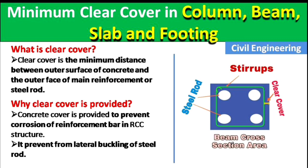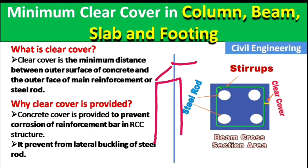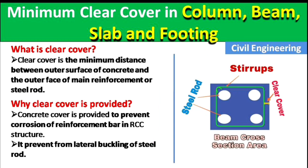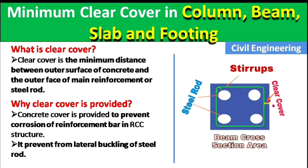You can see this is the cross-section of a column or beam, and this is the stirrup — the steel rod used in this column. This is the outer surface of the concrete. The distance between the outer surface of the concrete and the steel rod is known as the clear cover. In this video we will discuss how much the minimum clear cover should be.